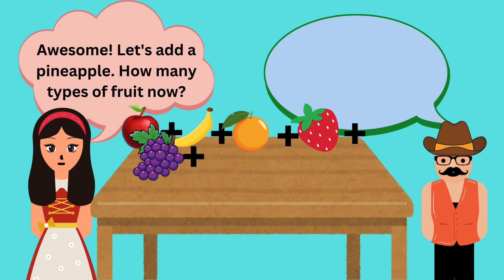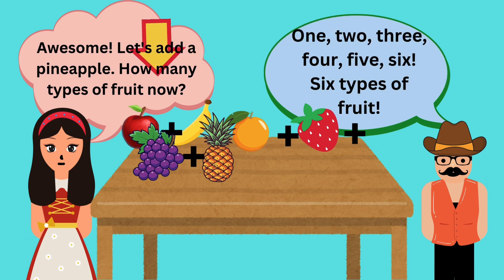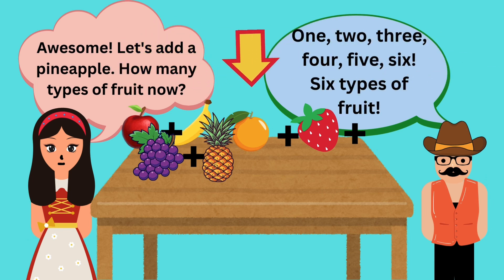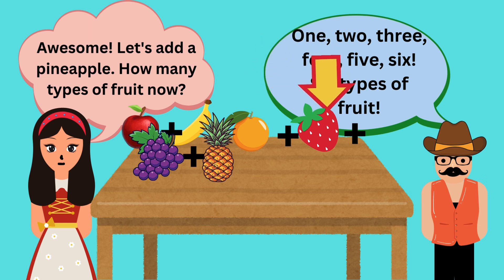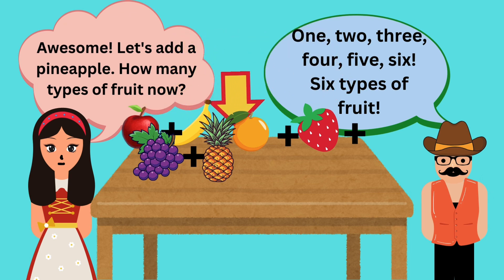Awesome. Let's add a pineapple. How many types of fruit now? One, two, three, four, five, six. Six types of fruit. Yeah!